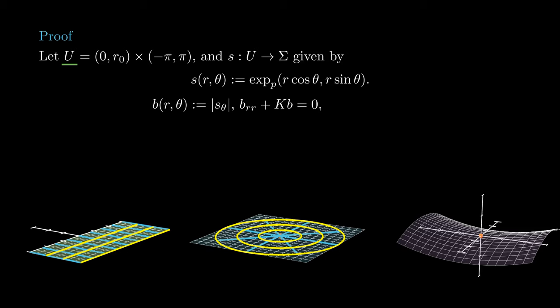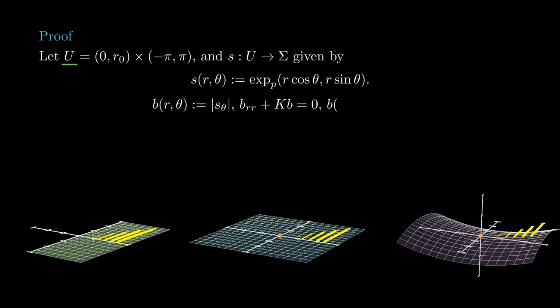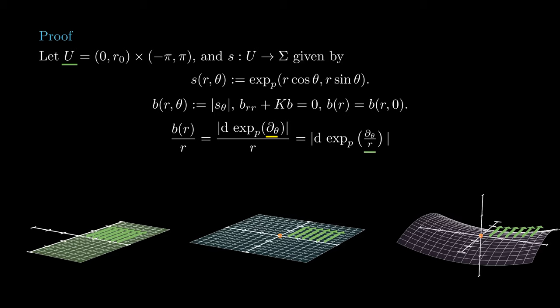Remember that if we denote by b the length of s_theta, then b_rr plus k times b equals 0. We proceed to compute the behavior of b as r goes to 0. For simplicity, we will write b of r for b of r, 0. By definition, b of r over r is the length of dx of partial θ at (r, 0) over r. Since dx is linear, this coincides with the length of dx of partial θ at (r, 0) over r. As we noticed before, partial θ at (r, 0) over r is a unit vector tangent to Tp sigma, and as r goes to 0, this unit vector converges to the unit vector in the direction of the y-axis. And we know that the derivative of the exponential map at the origin is the identity, so this length is precisely 1. This tells us that b of r behaves like r as r goes to 0.